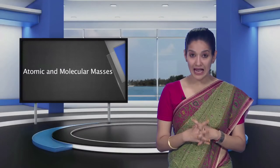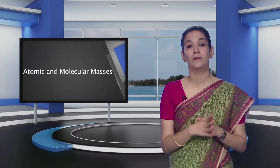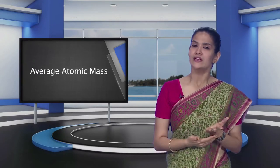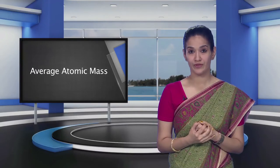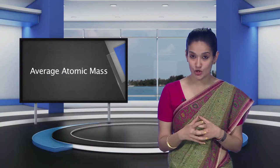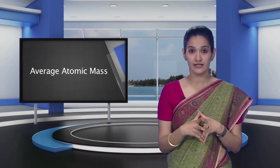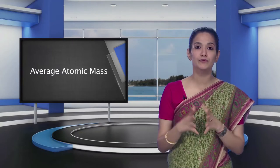When we use atomic masses of elements in calculations, we actually use average atomic masses of elements. Many naturally occurring elements exist as more than one isotope. When we take into account the existence of these isotopes and their relative abundance in nature, that is their percent occurrence, the average atomic mass of that element can be computed.